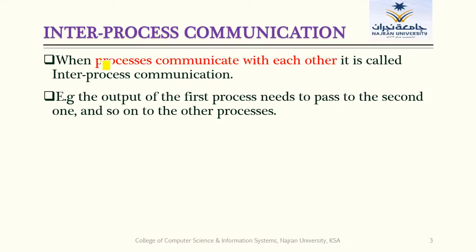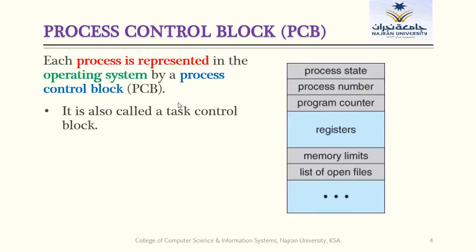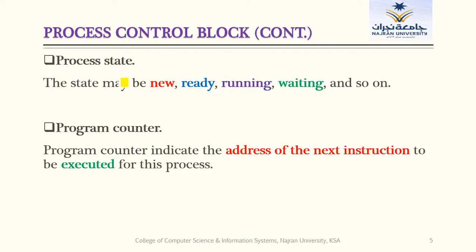Inter-process communication is the communication between processes — processes communicate with each other, so this is called inter-process communication. Then we started our discussion on the process control block, and we said that each process is represented in the operating system by a process control block, also called the task control block. The components of the process control block include: process state, process number, program counter, registers, memory limits, list of open files, and so on. Process states can be new, ready, running, waiting, or terminated.